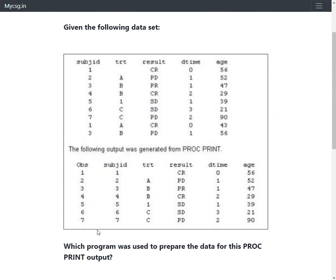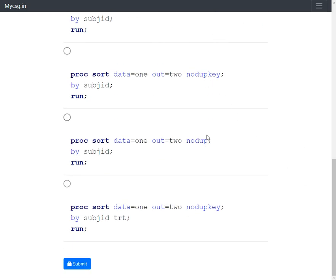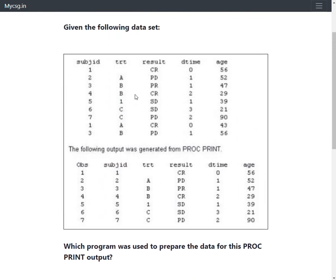Let us look at the input dataset and the output. The input has nine records — one, two, three, four, five, six, seven, eight, and nine — but only seven records appear in the output. So seven subjects, one record per subject. Looking at the input, subject one and subject three are repeated. We need to check whether these are true duplicates or whether they vary across one or more variables.